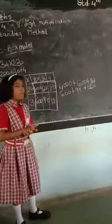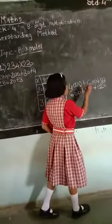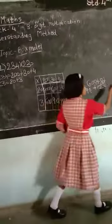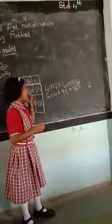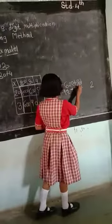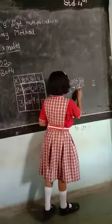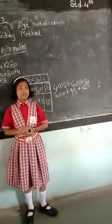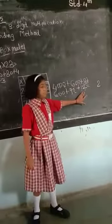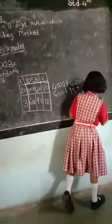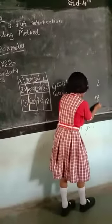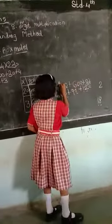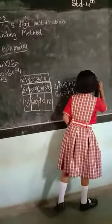Now I have to add the partial products. Adding the ones place: 0, 0, 0, 0, 0, and 2 — our answer is 2. Now we add the tens place: 0, 0, 8, 0, 9, plus 1. So 8 plus 9 is 17, plus 1 is 18. So there is 18: write 8 and carry 1 to the hundreds place.